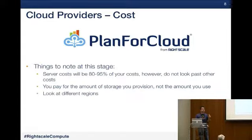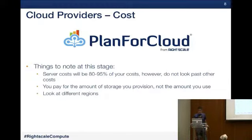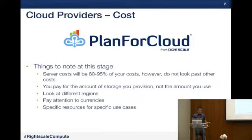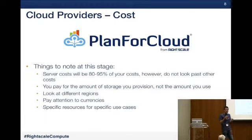Look at different regions — they're priced differently. Some might not be worth it due to latency, but if the option is open definitely assess regional costs. Pay attention to currencies. Also choose specific resources for specific use cases: EBS versus S3 versus Glacier. We did a blog post when Glacier came out comparing it to S3 — Glacier is about 90 percent cheaper than S3. A lot of users were building archiving solutions on S3 when they could move to Glacier and save 90 percent.